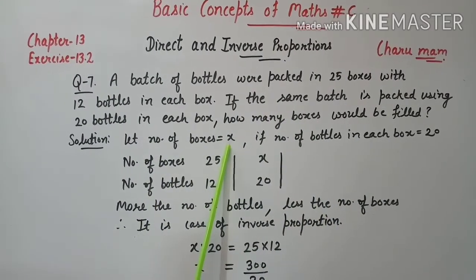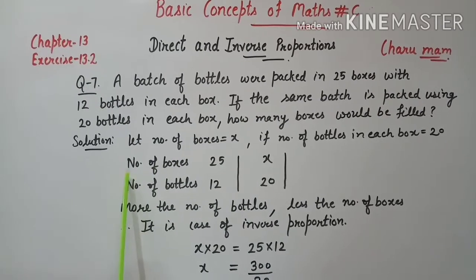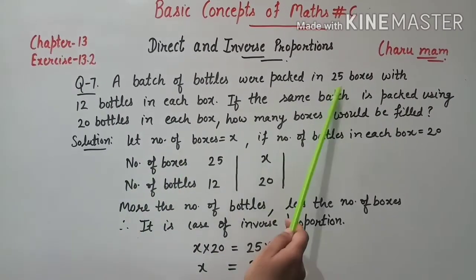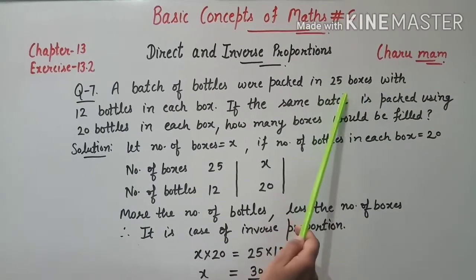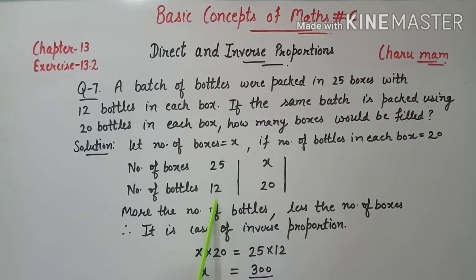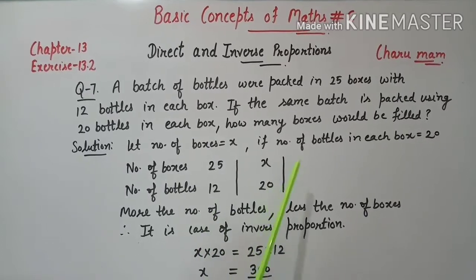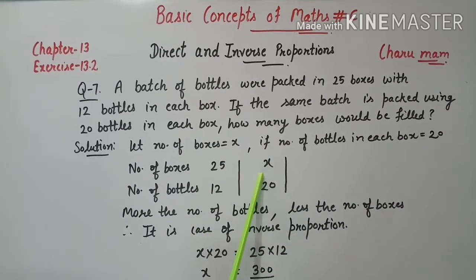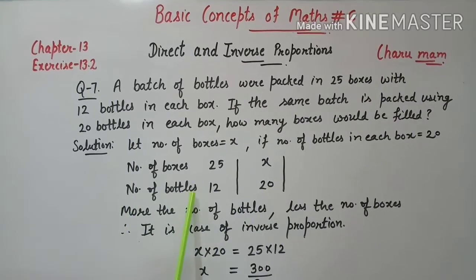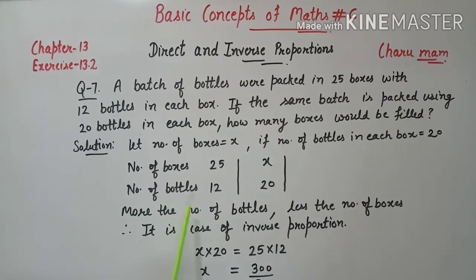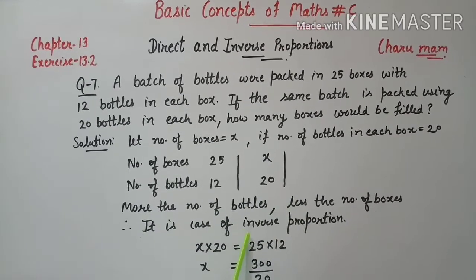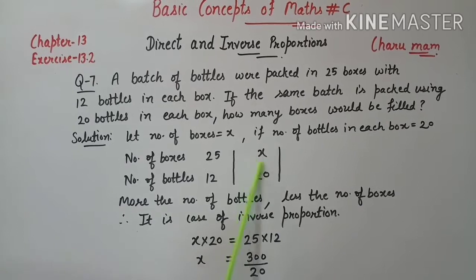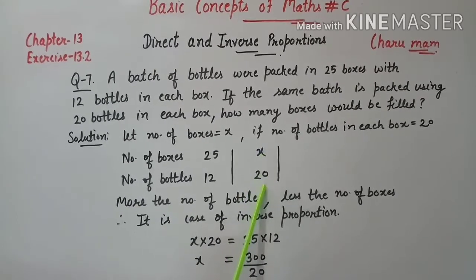हम table form करेंगे number of boxes and number of bottles। First case में: 25 boxes और 12 bottles। Second case में: 20 bottles और number of boxes = x। अगर number of bottles increase करेंगे तो boxes उतने ही कम लगेंगे — यह inverse proportion का case होगा।